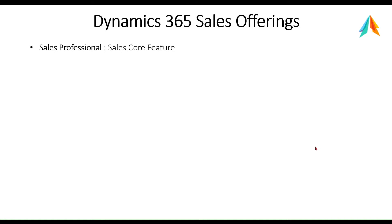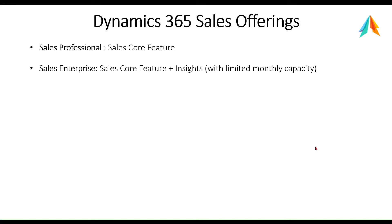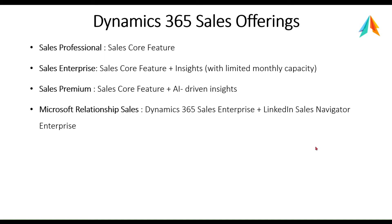Before the demonstration, let me also talk about what kind of Sales offerings and licenses we have. Sales Professional includes only Sales core features. Sales Enterprise includes Sales core features plus insights with limited monthly capacity. Sales Premium includes all the features of Sales Enterprise plus AI-driven insights. Microsoft Relationship Sales includes Sales Enterprise plus LinkedIn Sales Navigator.